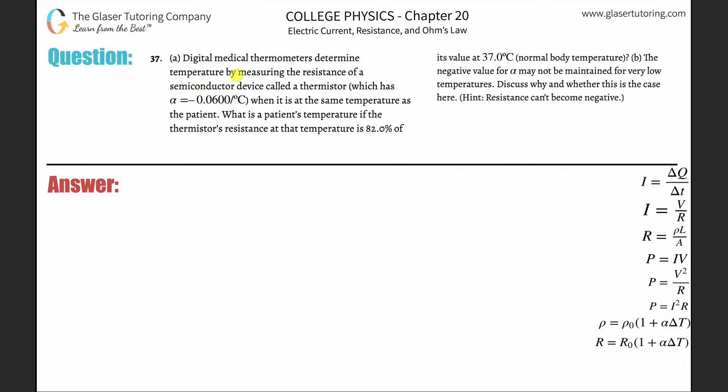Number 37, letter A. Digital medical thermometers determine temperature by measuring the resistance of a semiconductor device called a thermistor, which has a temperature coefficient alpha of negative 0.06 per Celsius. When it is at the same temperature as the patient, what is the patient's temperature if the thermistor's resistance at that temperature is 82 percent of its value at 37 degrees Celsius, which is normal body temperature?